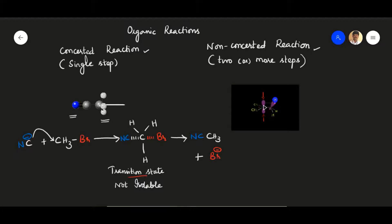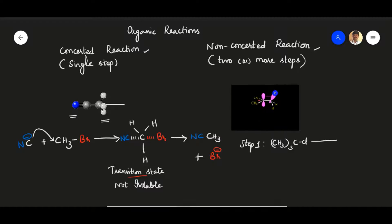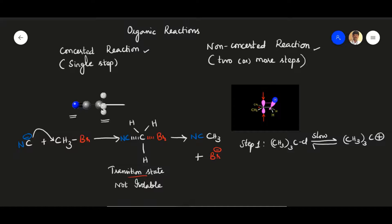Now we look at a non-concerted reaction, in which the bond between carbon and the attached halogen atom is broken, leading to the formation of a carbocation. Non-concerted reactions take place in multiple steps. In step one, tertiary butyl chloride is ionized into the tertiary butyl carbocation. This reaction is slow and reversible, since the carbocation formed is highly unstable and highly energetic, and may revert back to the original substrate.